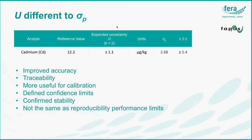They are different statistics. The uncertainty gives you improved accuracy, traceability, it's more useful for calibration, it's a defined confidence limit, and we also provide the datasheet with a confirmed stability. We provide that based on formal stability experiments, and it's not the same as the reproducibility performance limits.